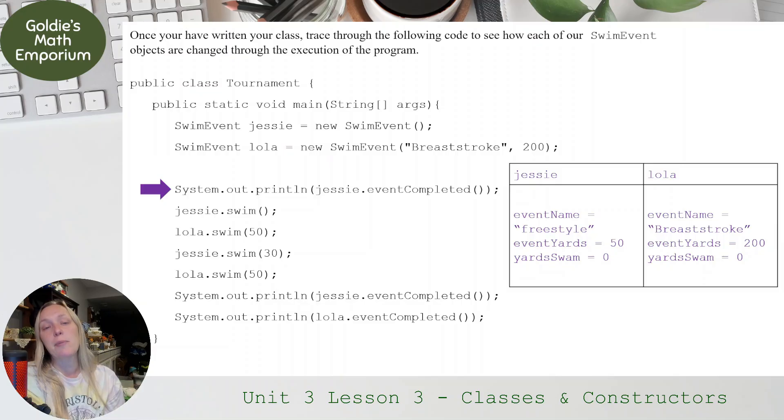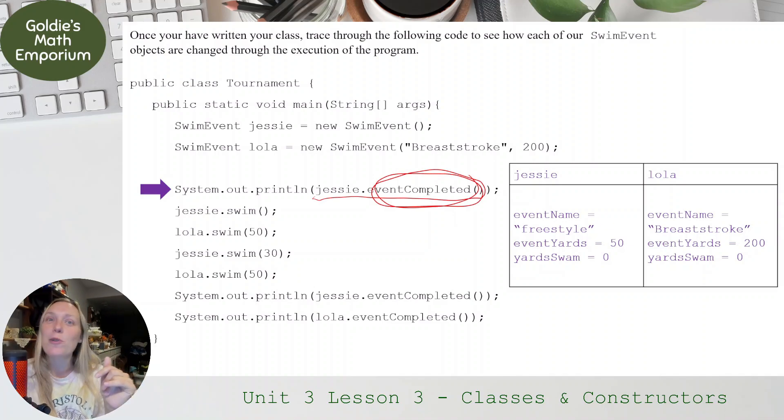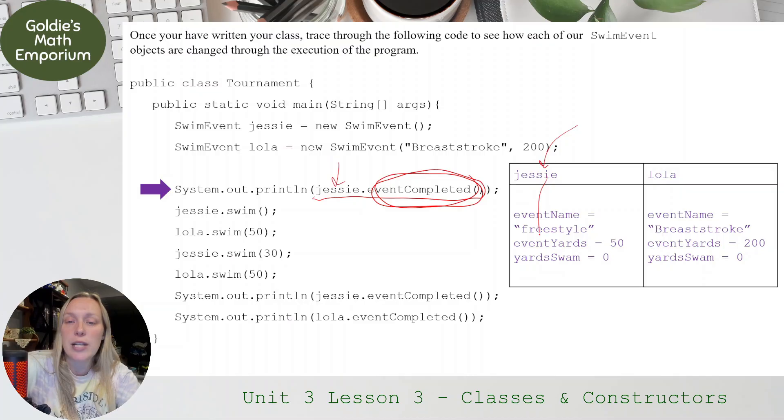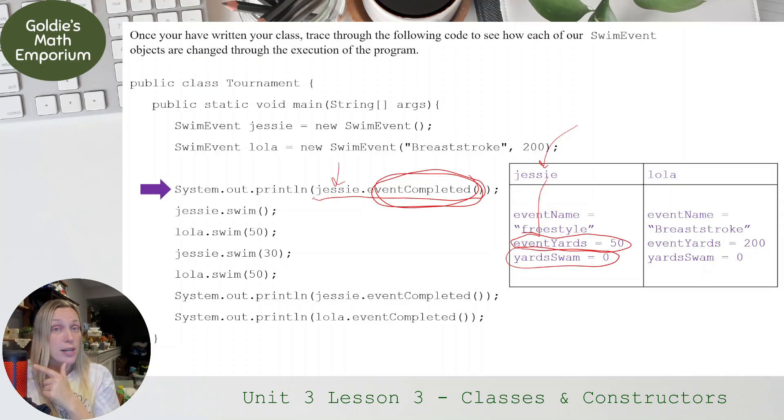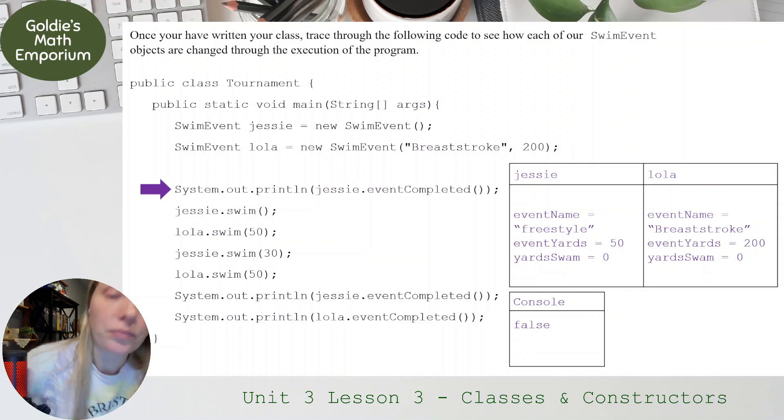Now, if I go to System.out.println, Jesse.eventCompleted. So Jesse.eventCompleted. So that is calling on this method, and what did this method do? It returned true if eventYards and yardsSwim was equal. So this says, okay, go to Jesse's data. Go to Jesse, go to his data. Is eventYards equal to yardsSwim? Return true if it is. If it's not, return false. So Jesse.eventCompleted is going to return false. So to the console, to your output there, false is what is going to get printed.